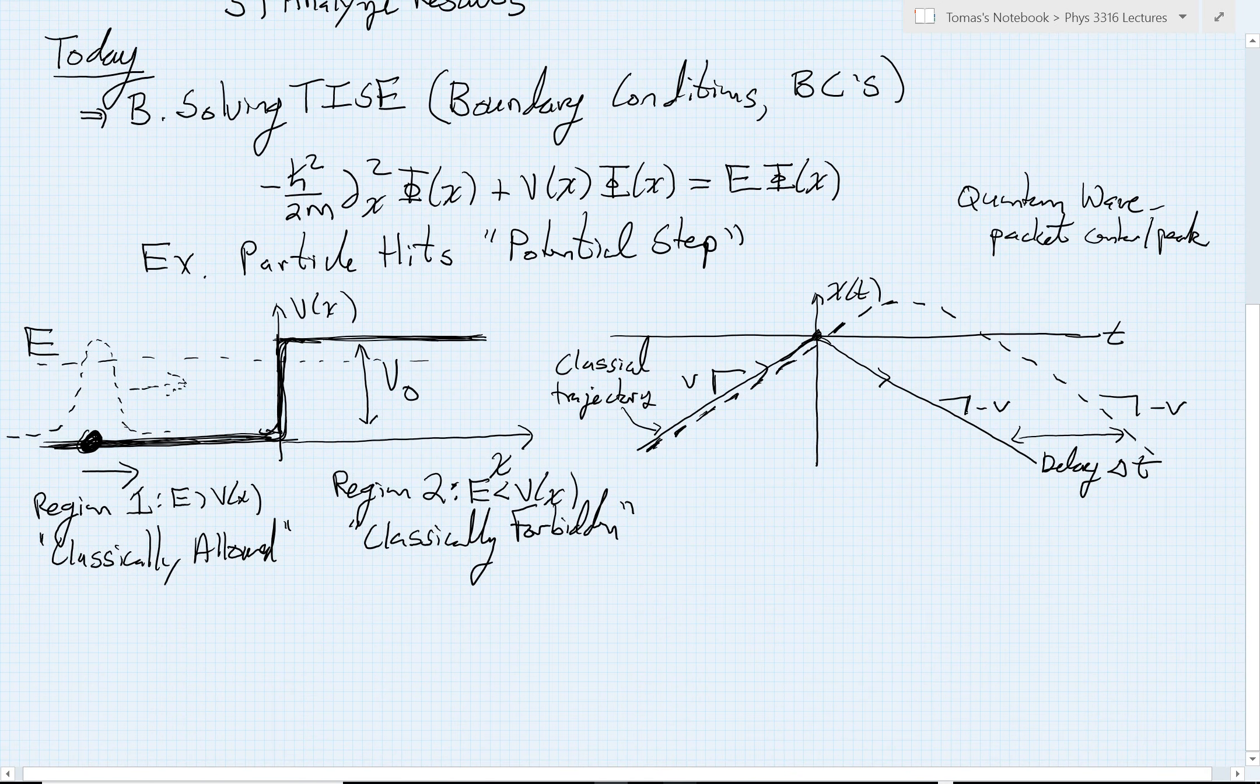In particular, we're working through this example of what happens when a particle hits a potential step. What we mean by this is that there's some potential V of X.